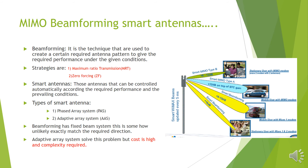MIMO beamforming — as the name suggests, in beamforming a spatial arrangement of the antennas is made to reduce the required performance. In this we are using smart antennas, which are antennas that can control automatically according to the requirement. There are two types of smart antennas: phased array systems and adaptive array systems.